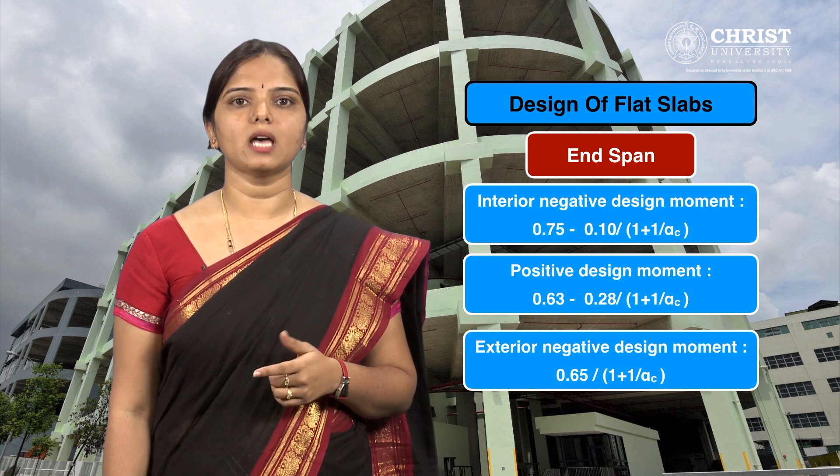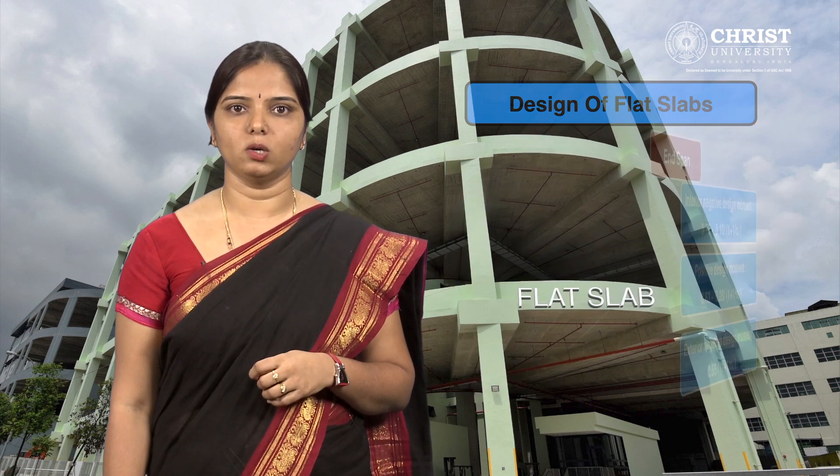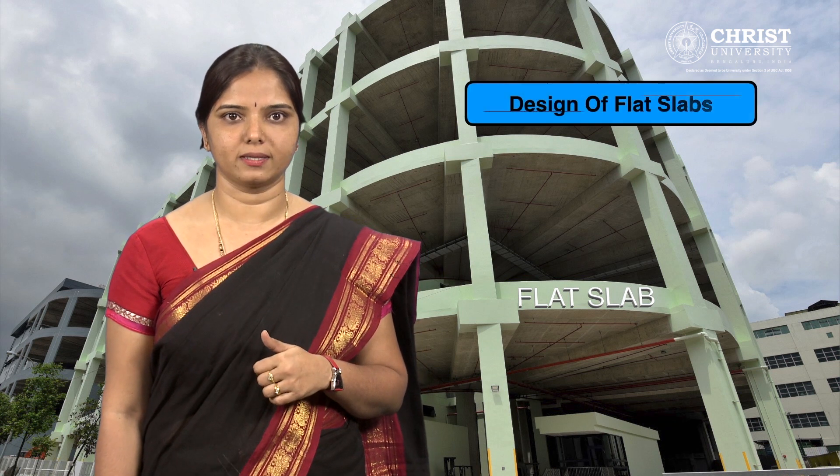Distribution of bending moments across the panel width: the distribution of bending moment across the panel width in a column strip is — negative bending moment is 100 percent at the exterior and 75 percent at the interior, and positive bending moment is 60 percent. The moments in the middle strip shall be the difference between the panel and the column strip moments.